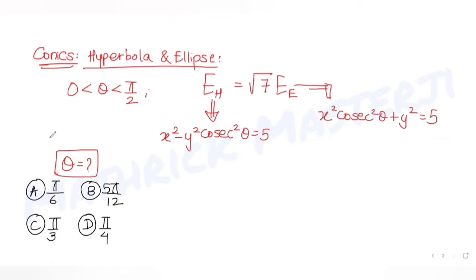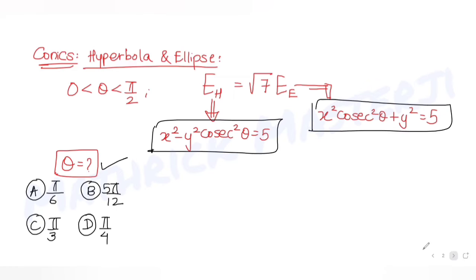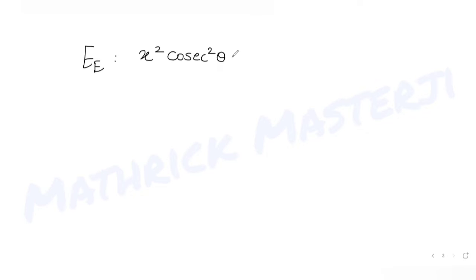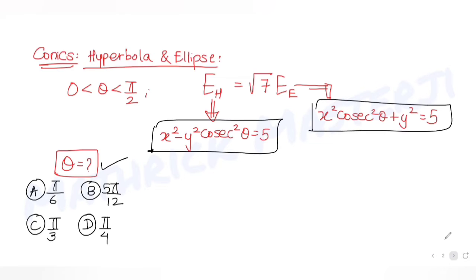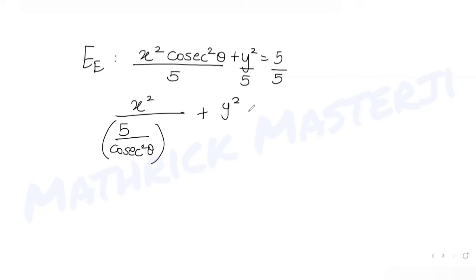We need to find the value of angle theta. First, let's analyze the two equations given for the hyperbola and ellipse. The equation of the ellipse is x² cosec²θ + y² = 5. Dividing throughout by 5, we get x²/(5/cosec²θ) + y²/5 = 1.